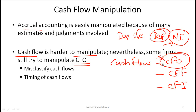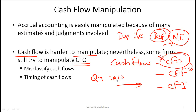A company that wants to manipulate focuses its energy on boosting CFO. Broadly speaking, it can do this in two ways. One is by misclassifying cash flows — a negative CFO item is categorized as a financing or investing activity to make CFO look better. Another technique is the timing of cash flows — in say Q4 2010, cash flows that should occur in that quarter are pushed out to the next quarter to boost CFO numbers for the current quarter.